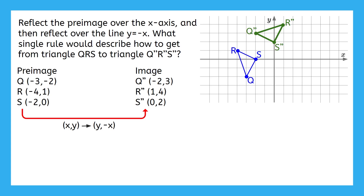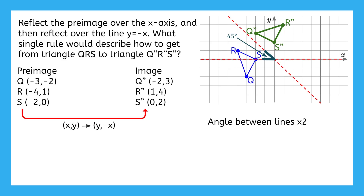There's a reason that this happened. The angle formed by the two intersecting lines of reflection happens to be 45 degrees. And if we double that, it gives us 90 degrees. Any time we reflect over intersecting lines, the rotation angle will be 2 times the angle created by the lines of reflection. So if we want to skip the middle step, we can just rotate 90 degrees clockwise to get to the image. We have officially completed our final example.